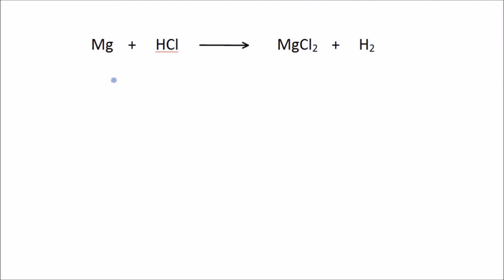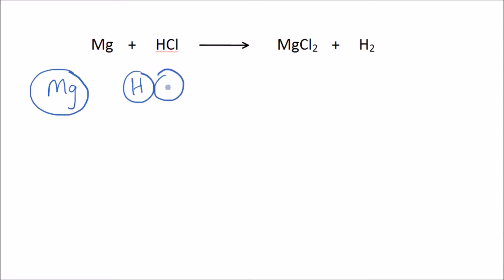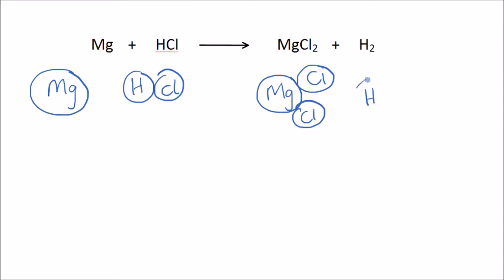Can you see why? Let's count up what we have on each side of the equation. On the left-hand side, we have one atom of magnesium and one molecule of hydrochloric acid — that's a hydrogen bonded with a chlorine atom. On the other side, we have magnesium chloride: one magnesium bonded with two chlorine atoms, and two hydrogen atoms bonded together to form a hydrogen molecule.